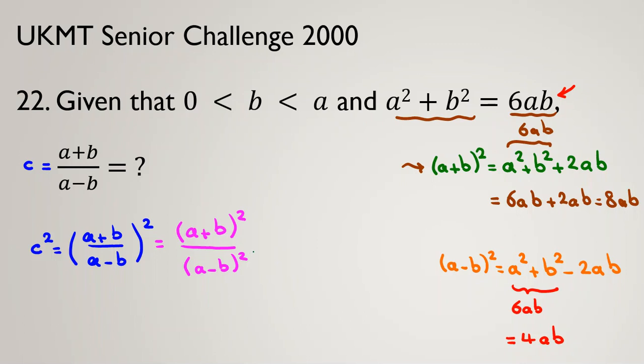Now replacing (a+b)² = 8ab and (a-b)² = 4ab, we get c² = 8ab/4ab. You can simplify: 8ab over 4ab is 2. So we can conclude that c² = 2.